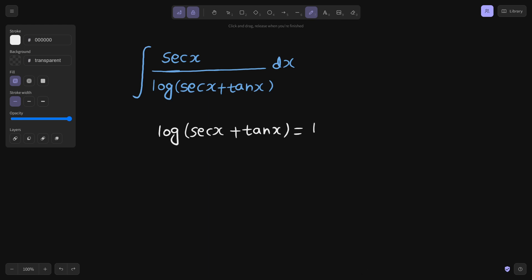So let's see whether it is working or not. So if you differentiate both sides, derivative of log is 1 upon whatever is inside log. Then you will use the chain rule. By chain rule, derivative of secant x is secant x tan x. Derivative of tan x is secant square x.